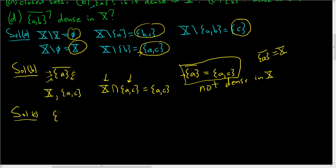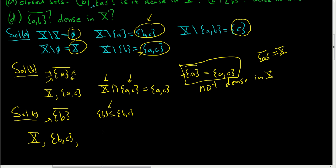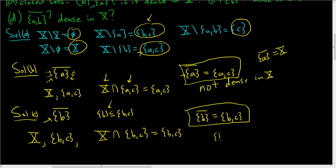Solution to C. We have to find the closure of the singleton {B}. We look at all closed sets containing this set. X obviously contains it, and the other closed set is {B, C}, since B is contained in the set containing B and C. The closure is the intersection of these closed sets, which gives us {B, C}. So the closure of singleton {B} equals {B, C}. Since this is not equal to X, singleton {B} is not dense in X.